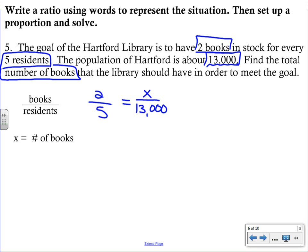We are going to solve by cross-multiplying. Like I mentioned before, it's helpful to have the variable on the left-hand side of the equation. So we're just going to start with that cross product. We have 5x. Then we'll take care of the other cross product. We'll get 26,000. We again have just a simple one-step equation. We're going to divide both sides by 5. And we learn that we should have 5,200 books.